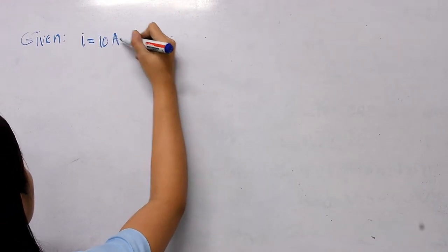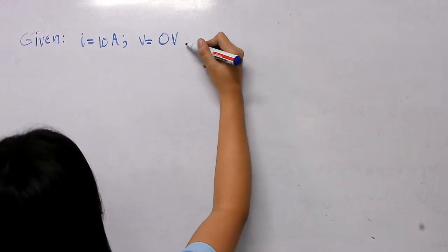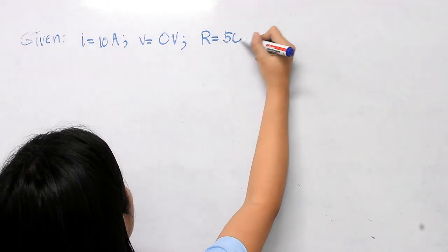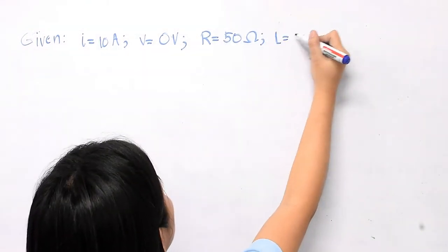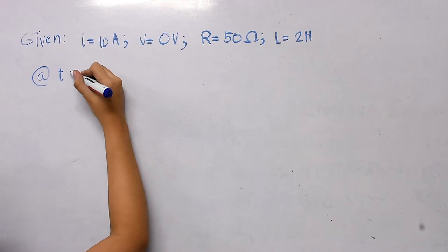We have the given: current equals 10 amperes, voltage equals 0 volts, resistance equals 50 ohms, and inductance equals 2 henrys.